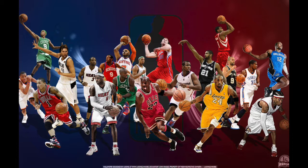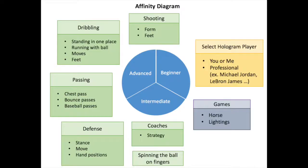You, me, or even a professional basketball player can appear as a hologram. There are six different ways the hologram can be used: shooting, dribbling, passing, learning and watching defenses, coaching, and playing games. All tasks will be modified and changed according to the skill level selected — beginner, intermediate, and advanced.